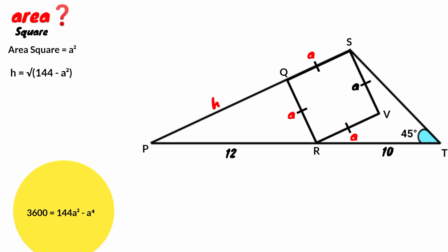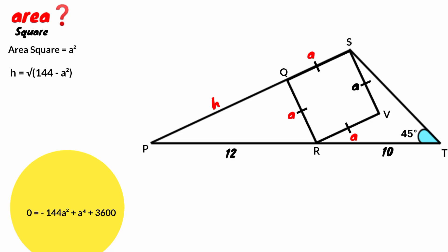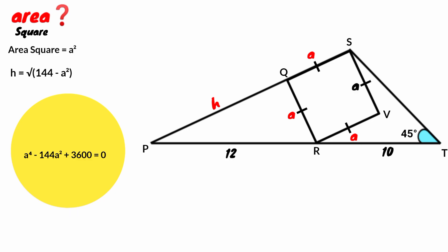Let's multiply through by minus 1. 3,600 times minus 1 is minus 3,600, and 144A squared minus A to the power of 4 multiplied by minus 1 gives minus 144A squared plus A to the power of 4. Taking minus 3,600 to the right: 0 equals A to the power of 4 minus 144A squared plus 3,600. This is a quadratic equation which we can solve by the quadratic formula.